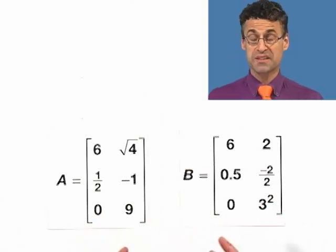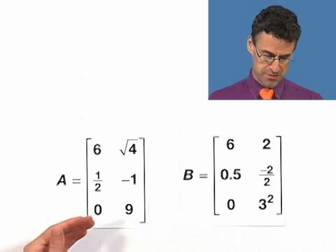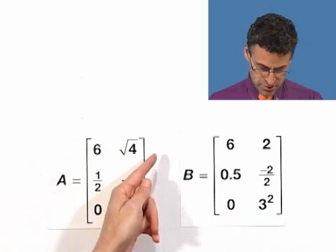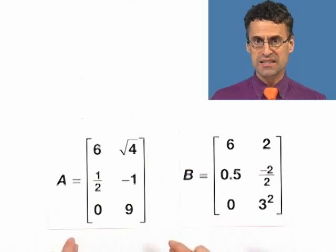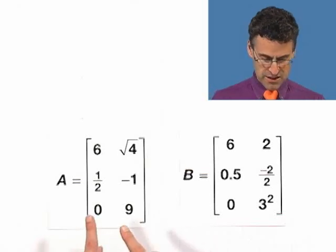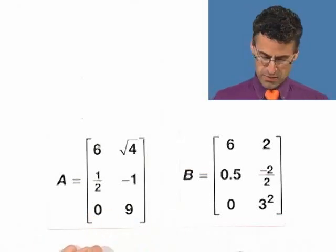Well, there are two basic things we have to check. Are they the same size? Well, this is a 3 by 2, 3 by 2, so the same size. And now is each particular element equal to the corresponding element on the other one? Let's just check it out.